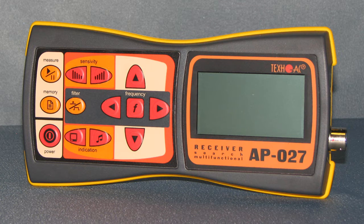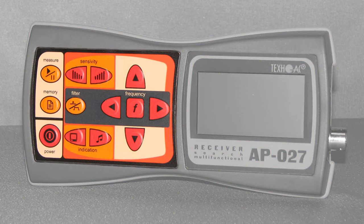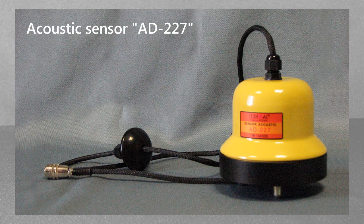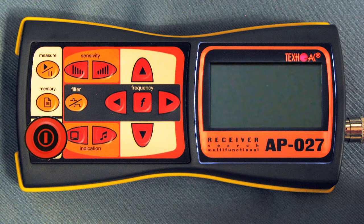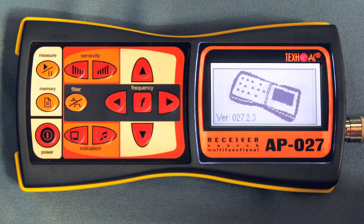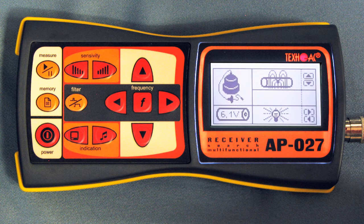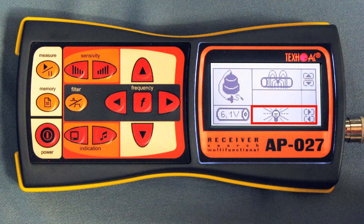Techno AC introduces the new multifunctional search receiver AP027. Let's look at key mapping when the receiver is connected to an acoustic sensor. The power button turns the device on and off. When the voltage is sufficient for operation, the screen displays the device model, followed by a starting screen showing a battery icon with voltage indication and a screen brightness indicator. The brightness is adjusted with the corresponding arrow keys.